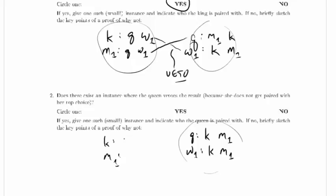And woman 1 went king, man 1. So man 1 will go queen, woman 1.